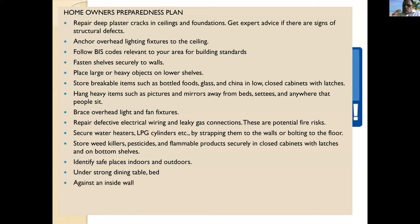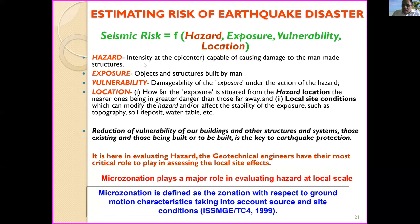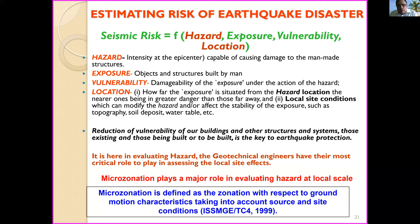For a structure to be properly designed, we need to know exactly what the hazard is. Microzonation — as Professor Ghosh explained in previous lectures — is one of the important methodologies for a nation to undertake, since it cannot be done by individuals but must be done at the country level. Scientific institutions should play a major role in evaluating hazard at a very local scale. Microzonation is defined as zonation with respect to ground motion characteristics, taking into account source and site conditions. The national macrozonation map identifies vulnerable regions — zones 2 through 5 — with Zone 5 being the most critical (the Northeast and Bhuj area). It provides necessary inputs for earthquake-resistant design, land use planning, building design and construction improvement, emergency response preparedness, and economic forecasting.